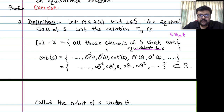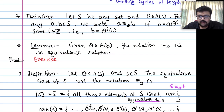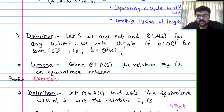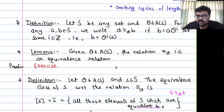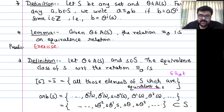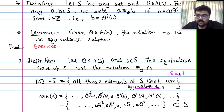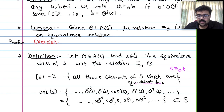The orbit of s under theta, for S finite, consists of exactly the distinct elements {s, theta(s), theta^2(s), ..., theta^{L-1}(s)}, where L is the smallest positive integer such that theta^L(s) = s. Then from the orbit we get a cycle.